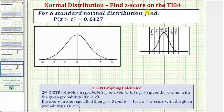Welcome to an example on how to find a z-score for a standard normal distribution on the newer version of the TI-84, given we know that the probability of the z-score being greater than c equals 0.6127.